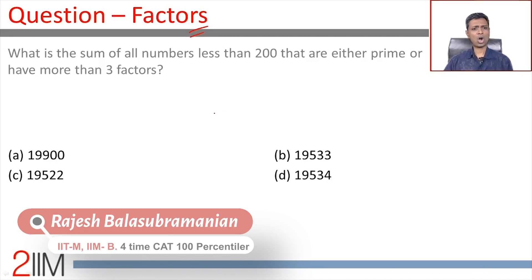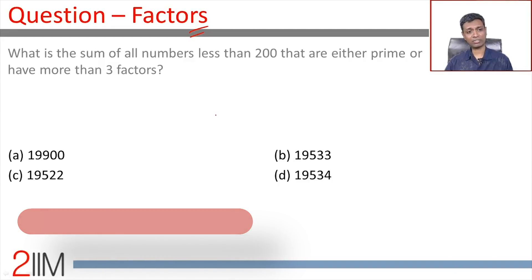What is the sum of all numbers, all natural numbers less than 200, that are either prime or have more than three factors? All numbers less than 200 that are either prime or have more than three factors. So what are we adding here?